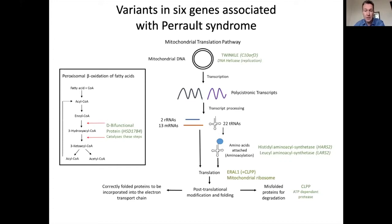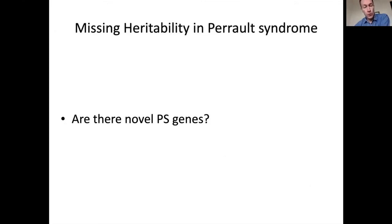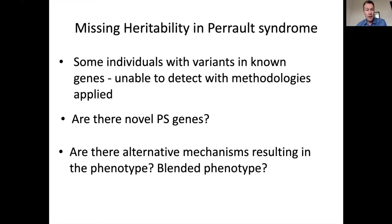The questions we had for the families we were still seeing were: are there novel Perrault syndrome genes beyond these six? Are there variants we weren't able to identify — such as non-coding variants? And as we found in a couple of cases, are there individuals with a change in a hearing loss gene and independently a change in a gene causing ovarian insufficiency — a blended phenotype? This led us to a family ascertained through colleagues in Israel — Erich Halpern at the Rambam — of three young women affected with absent ovaries, mild intellectual disability, and profound hearing loss.